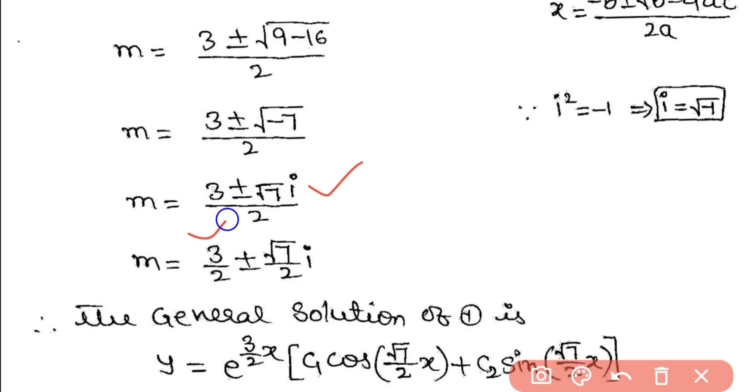This gives 3/2 ± (√7/2)i. So this is in the form A ± Bi, and the general solution is yc = e^(Ax)...